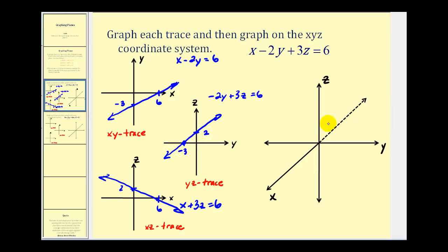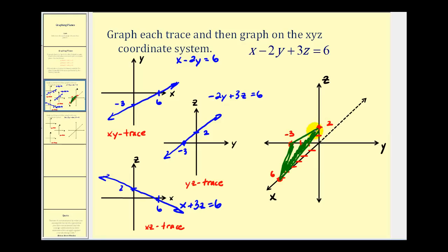So now that we have all of the intercepts, we can go ahead and plot them on the 3D coordinate system to sketch this plane. The x intercept is positive six, so we'll go out six units along the x-axis. The y intercept is negative three, so we'll go to the left three units. And then the z intercept is positive two, so we'll go up two units. Now we'll form a triangle with these three points and shade it, and this gives us an idea of how that plane looks in three dimensions — showing where it crosses each axis as well as the xy, yz, and xz traces.